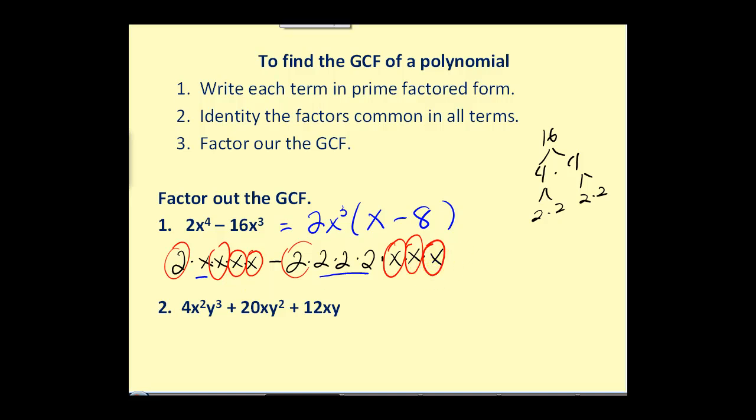So, for this next example, we know that 4x cubed y cubed is equal to 2 times 2 times 2 factors of x and 3 factors of y. 20xy squared would be 2 times 2 times 5, 1 factor of x, and 2 factors of y. 12xy would be 2 times 2 times 3 times x times y.